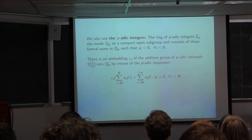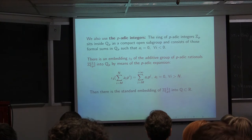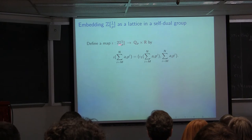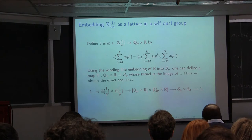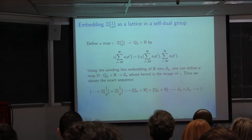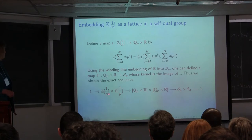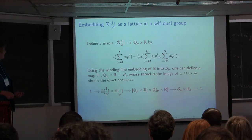Jerry Kaminker pointed out to me that Z[1/p], when injected into Q_p × R via the diagonal action, has a quotient that is in fact the p-solenoid — he noted this when I was giving an earlier talk, mentioning that he, Jack Spielberg, and Ian Putnam had thought about this. So we have a map of Z[1/p] × Z[1/p] into (Q_p × R)², and the quotient is S_p × S_p.